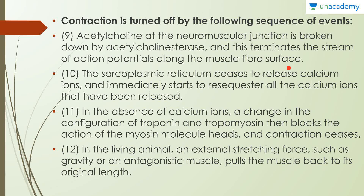Whenever contraction has to turn off, acetylcholinesterase is released into the synaptic cleft and breaks down all the acetylcholine molecules, switching off the action potential. The sarcoplasmic reticulum, no longer experiencing a voltage change, ceases to release calcium ions and immediately starts to re-sequester all the calcium ions that have been released. In the absence of calcium ions, a change in the configuration of troponin and tropomyosin blocks the action of the myosin molecule heads. Since no calcium ions remain on the troponin TpC unit, the sensitivity of actin toward myosin is reduced and the myosin head detaches from actin — contraction ceases.